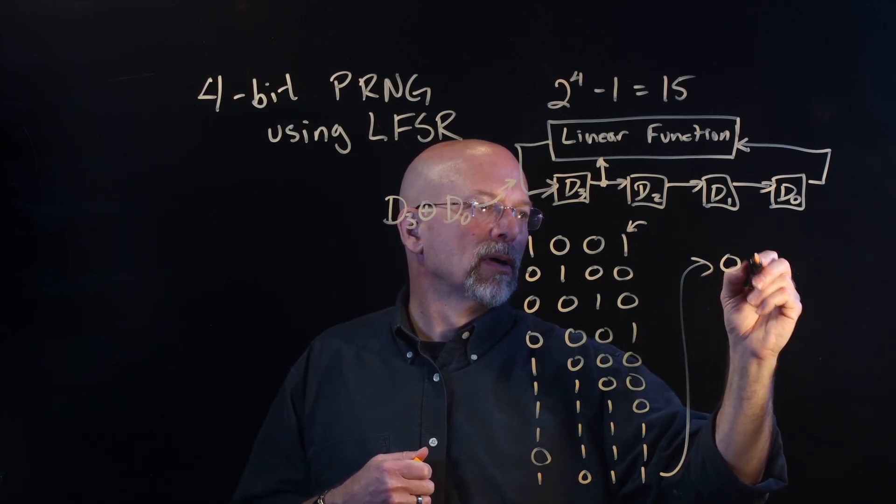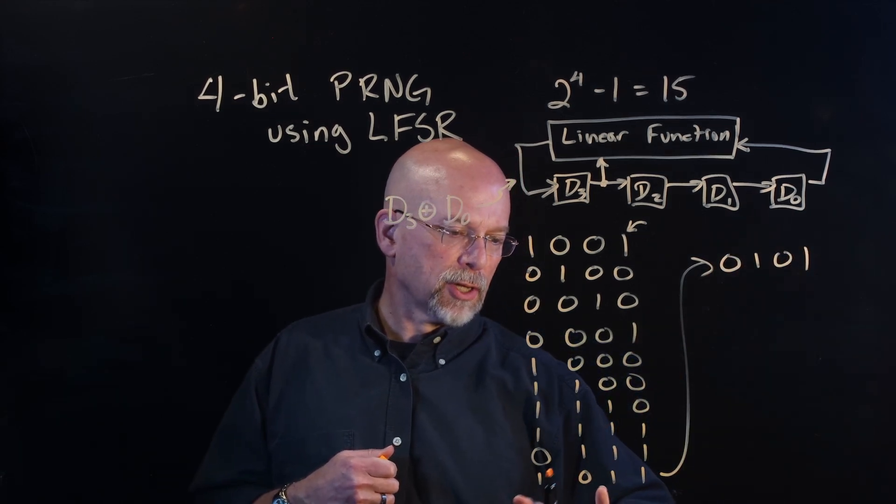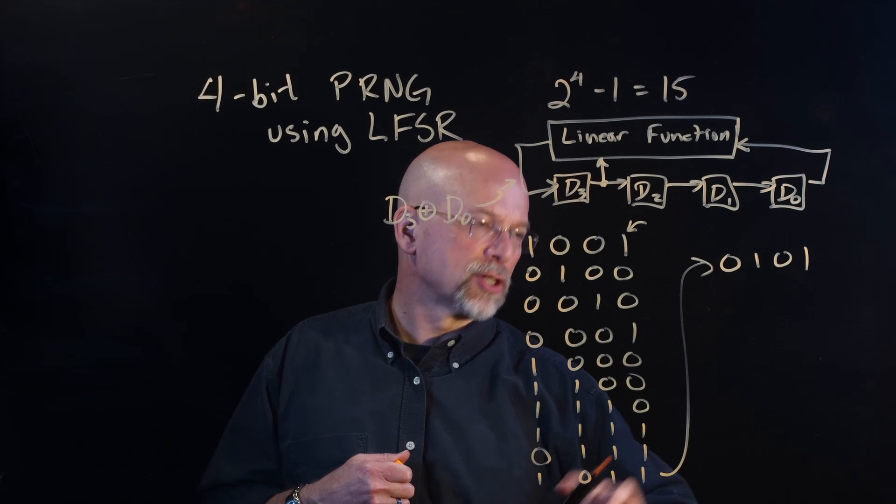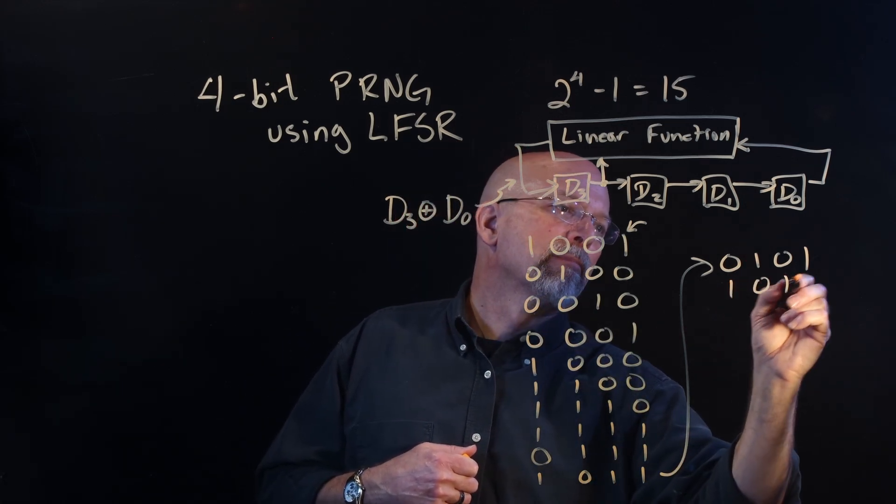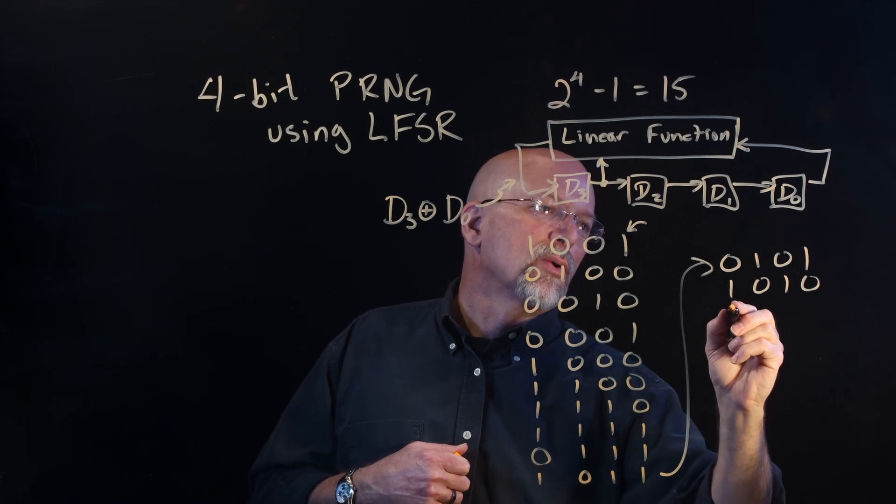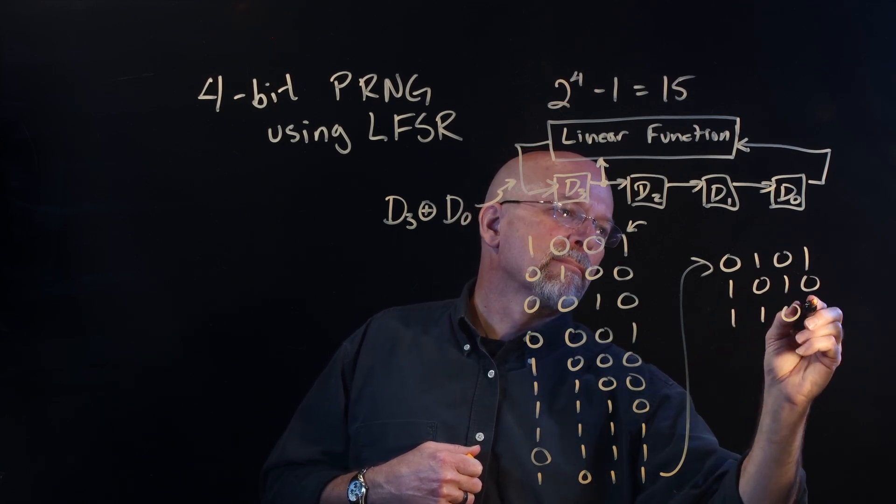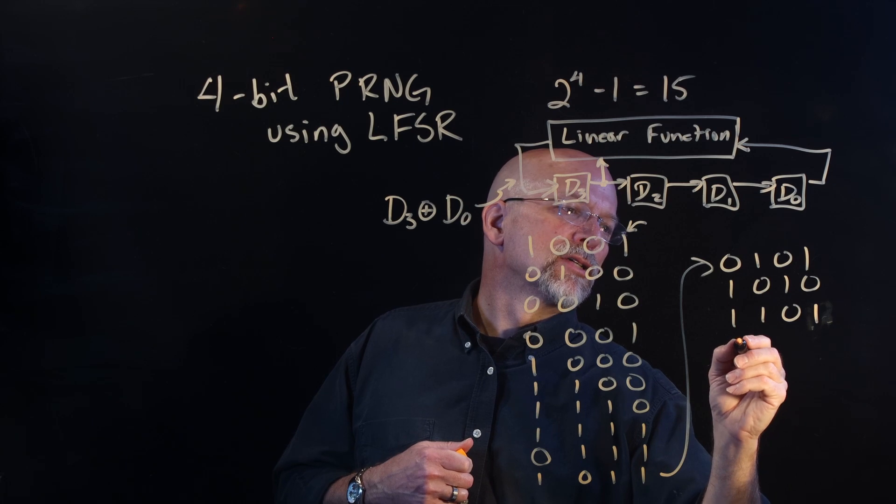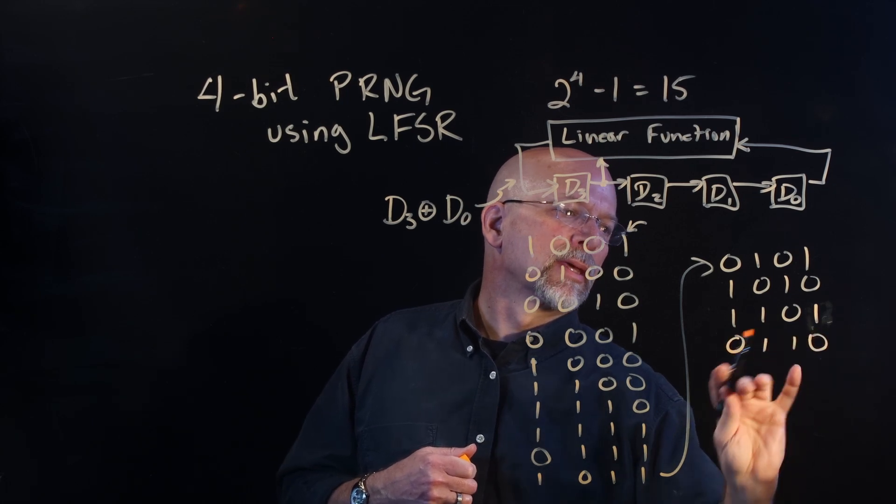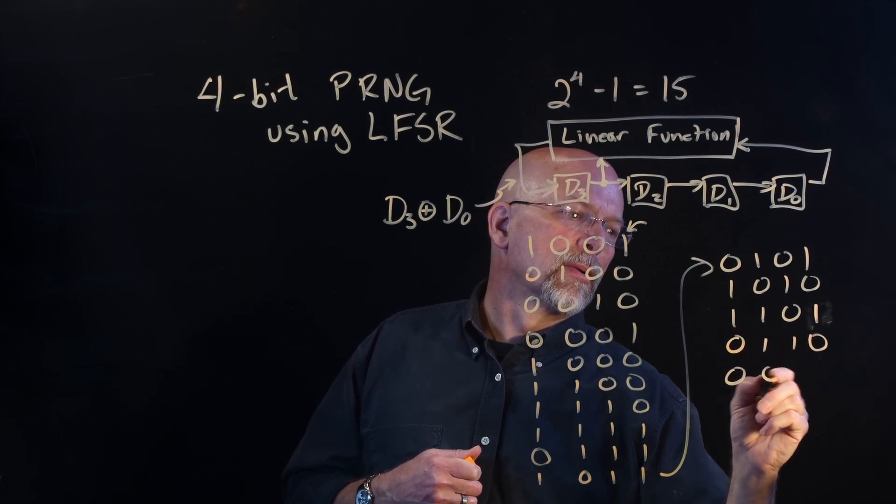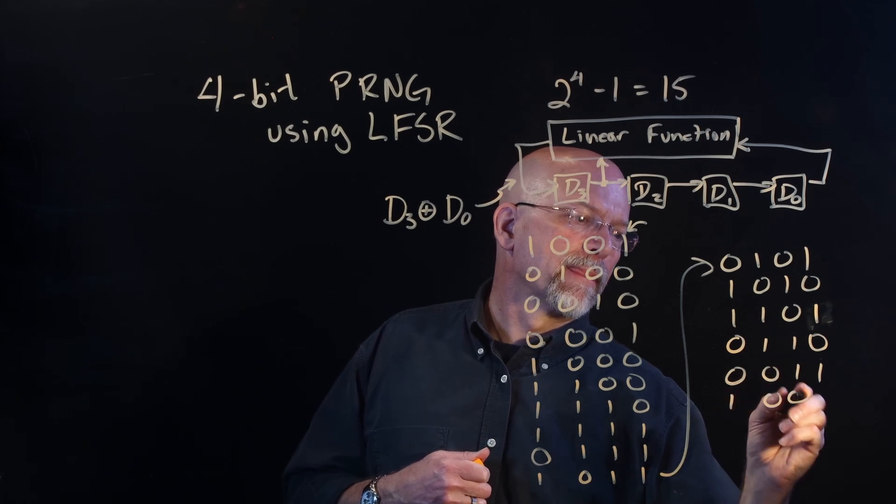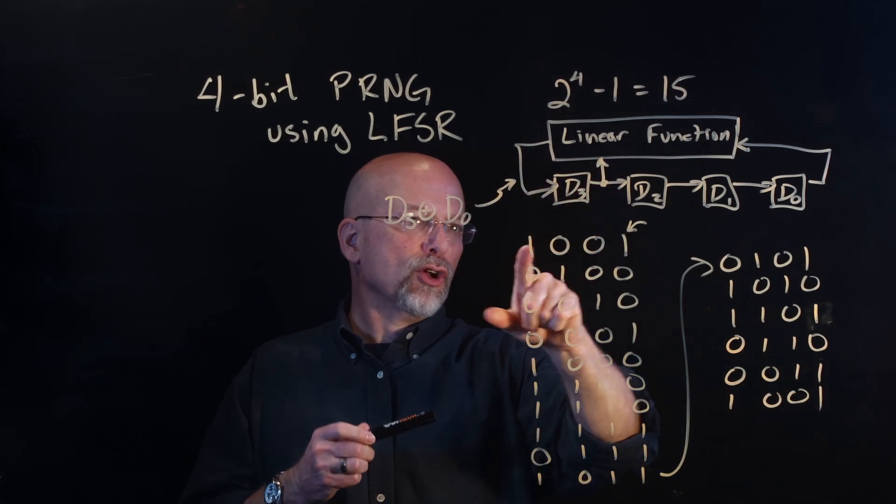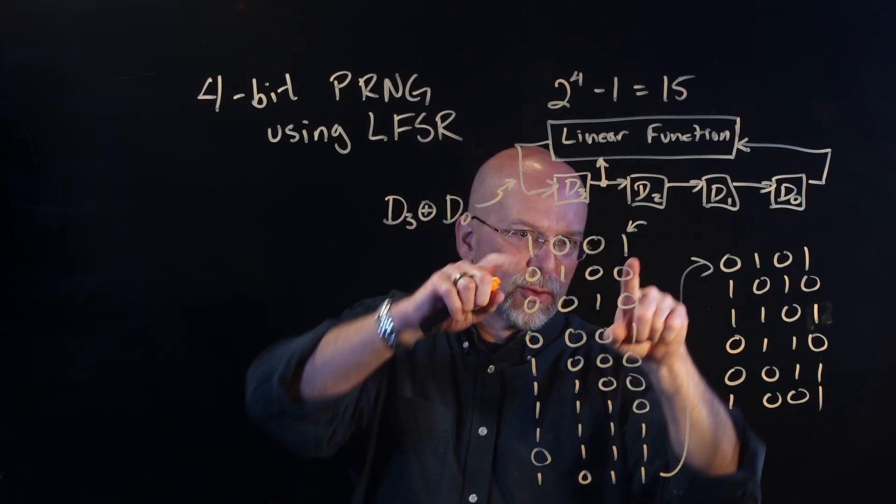We've got same, 0. That shifted these three bits one position right. Different, 1. Different, 1. Same, 0. Same, 0. Different, 1. And we have looped back to our 1, 0, 0, 1.